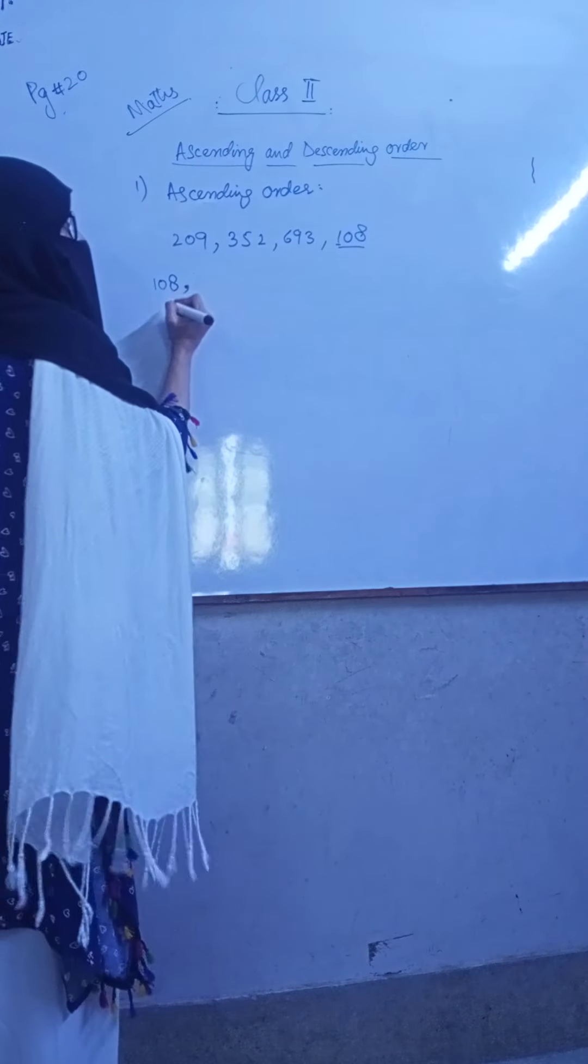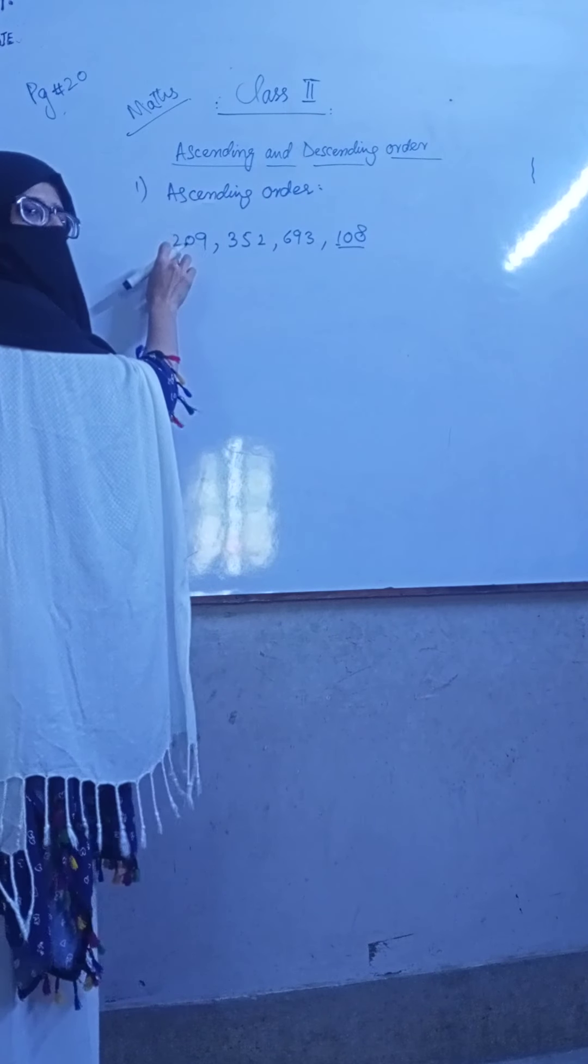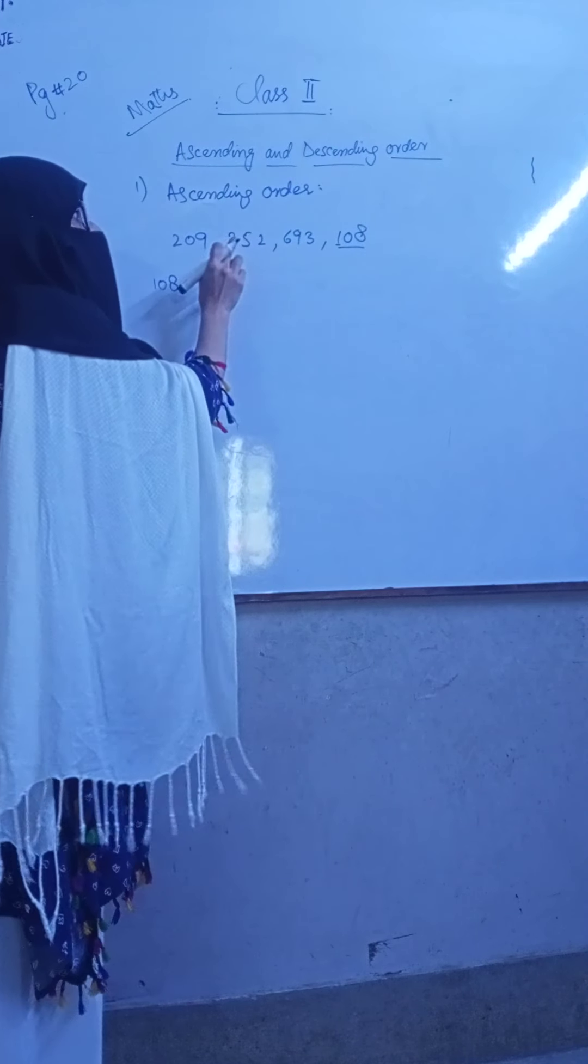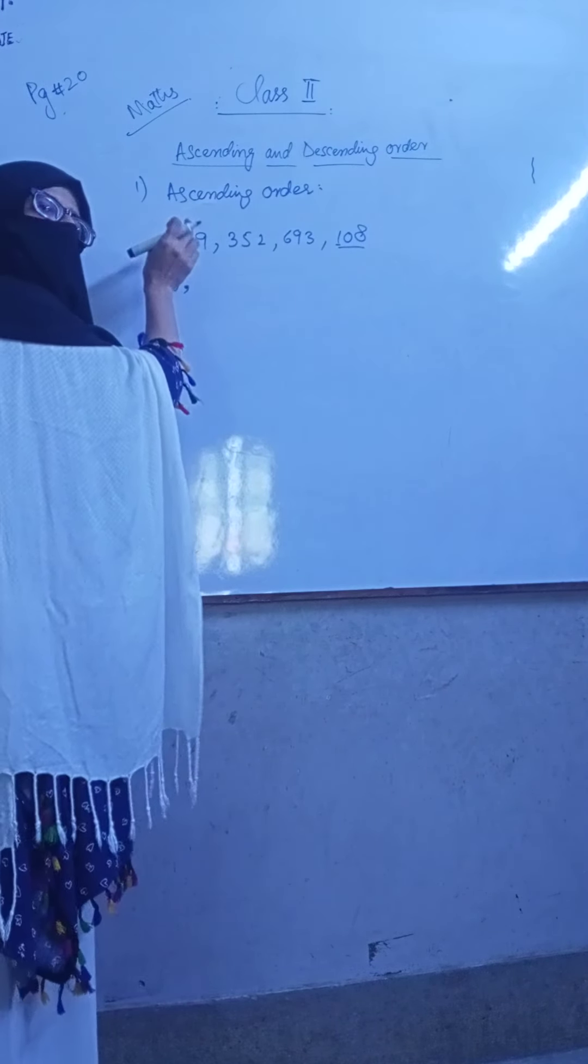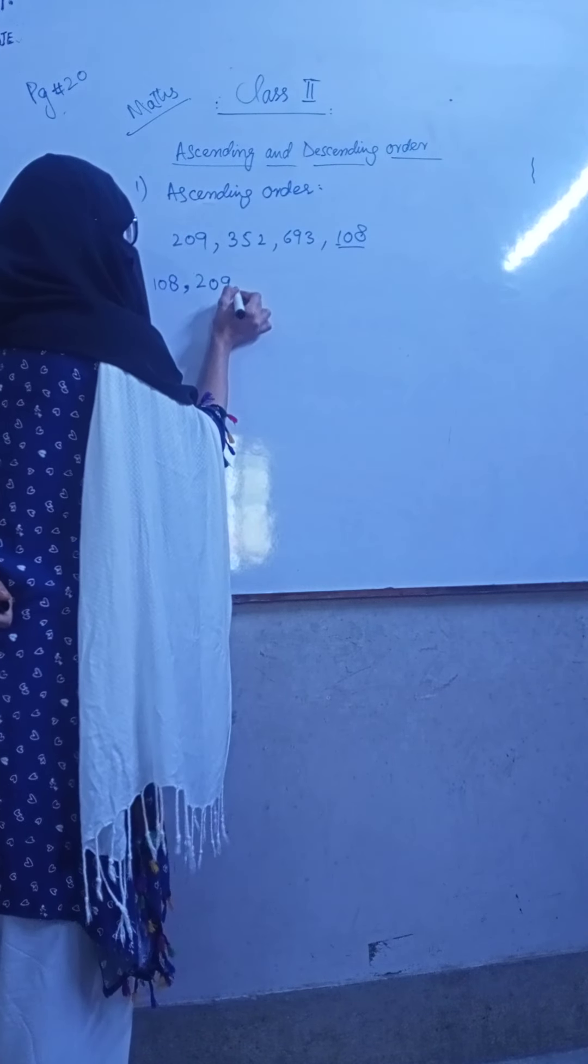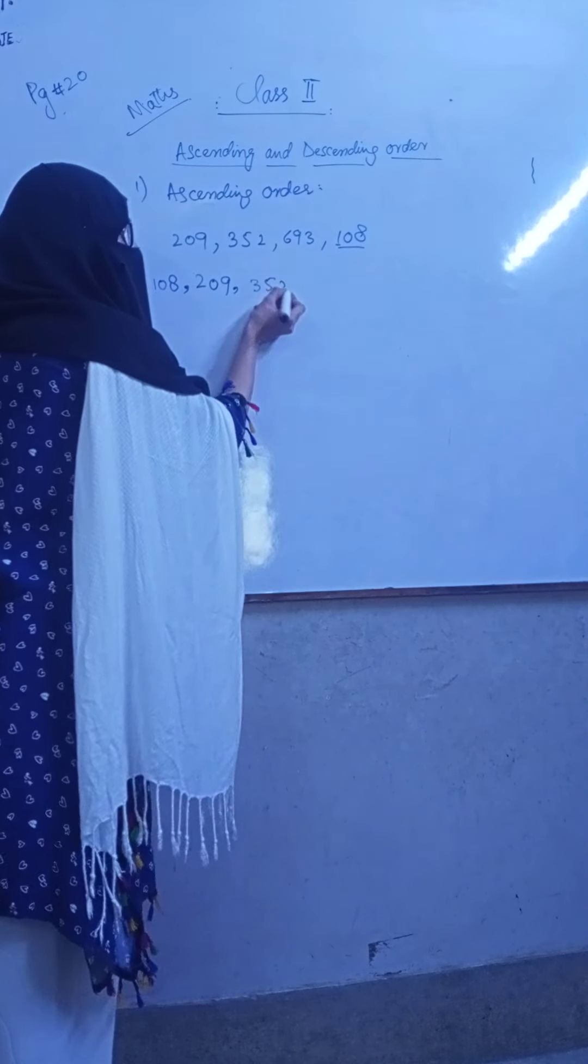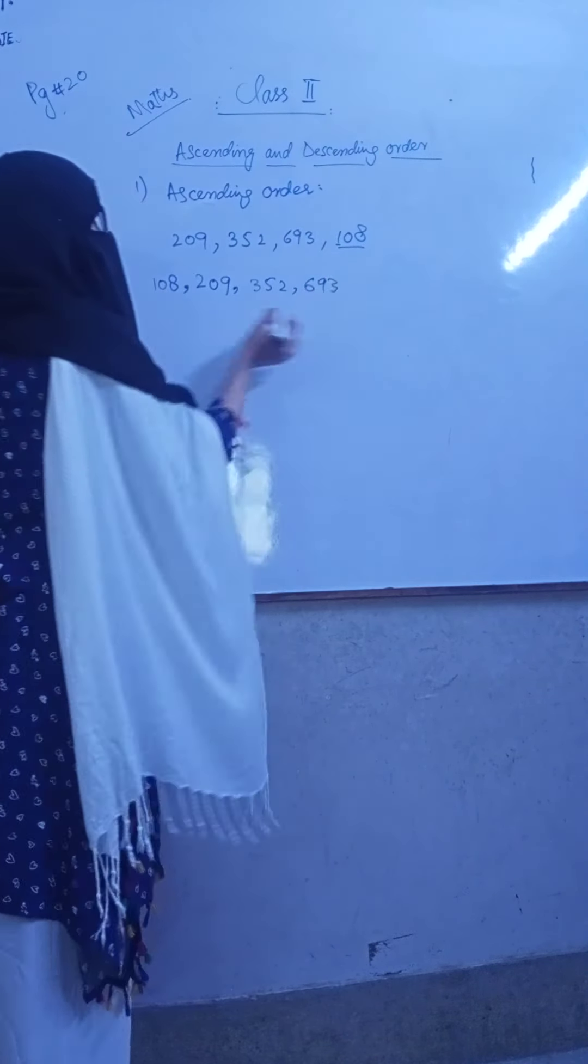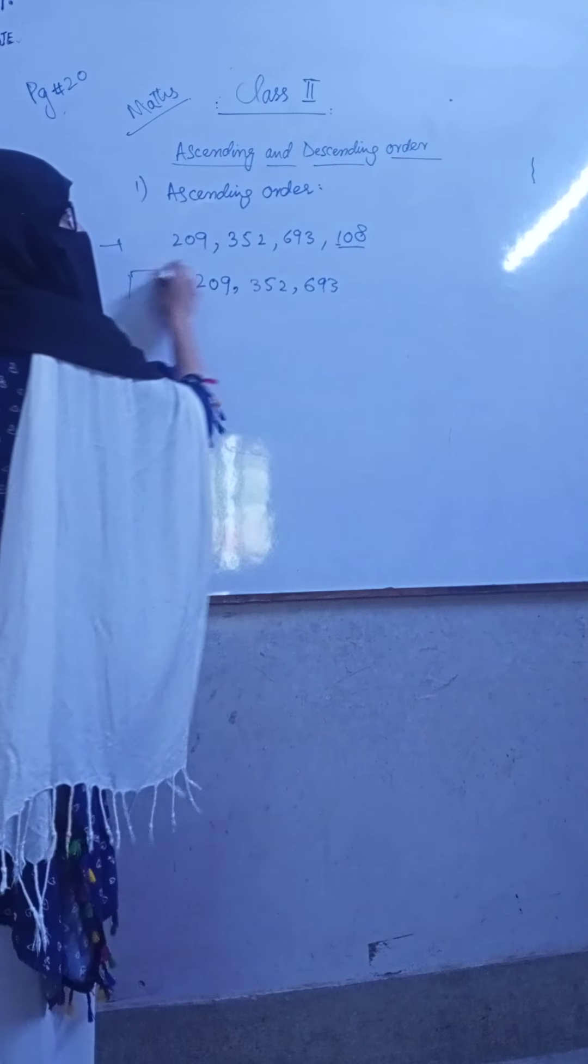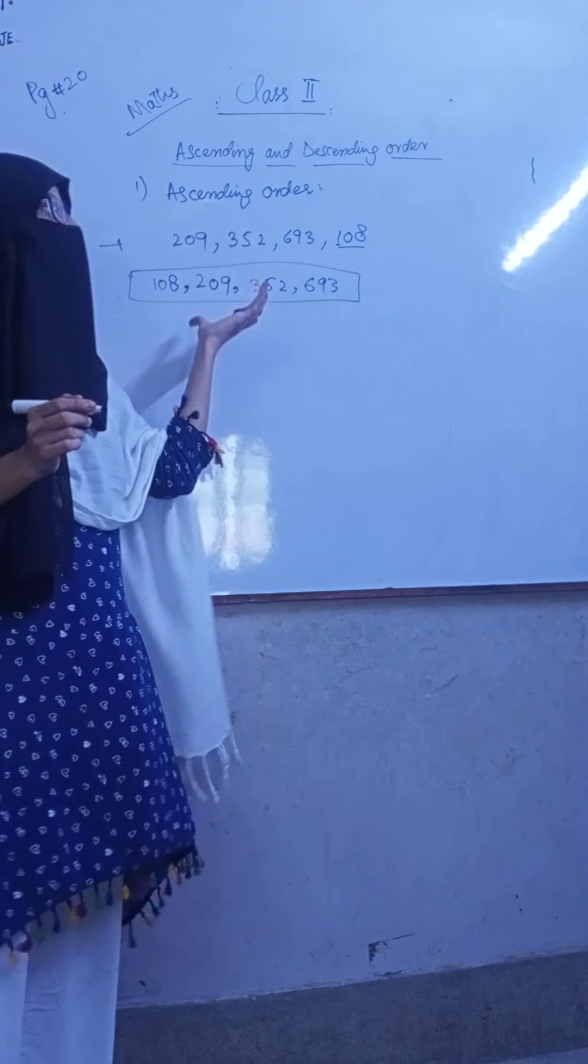Second, 209. Third, 352. And 693. This is called Ascending Order. This is the position and this is the order. This is the number in ascending order.